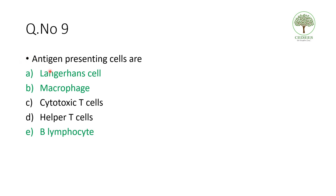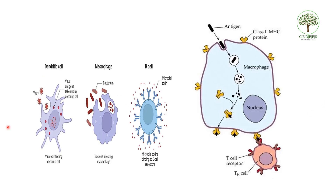Ninth question: which are antigen presenting cells? There may be multiple correct options. The antigen presenting cells are Langerhans cells, macrophages, and B lymphocytes — all are antigen presenting cells. The dendritic cell, macrophage, and B cell all take the antigen, process it, and present it to T cells.